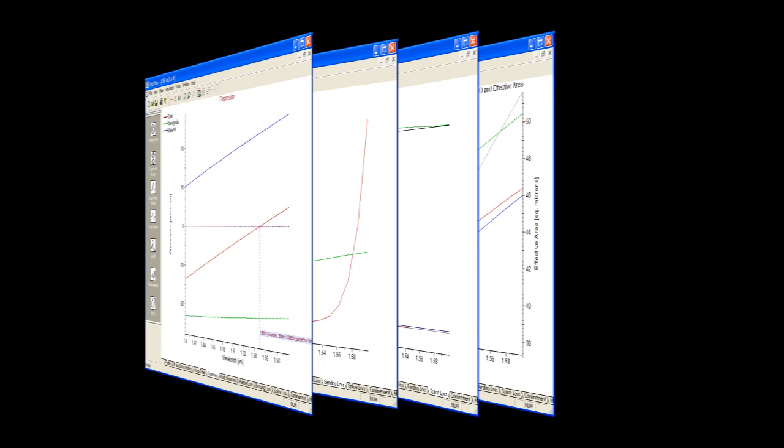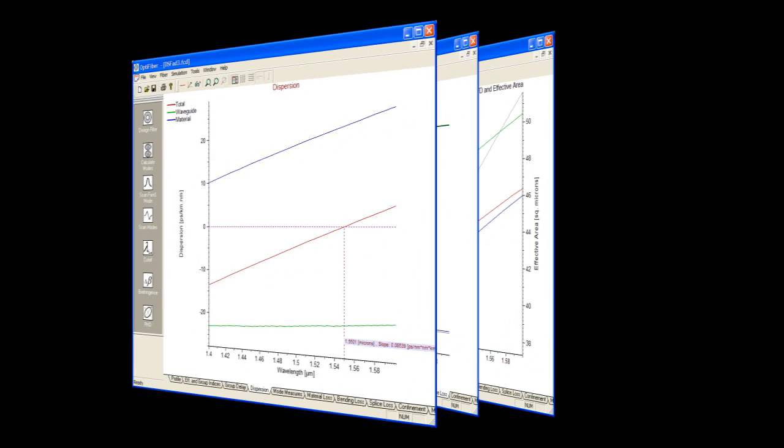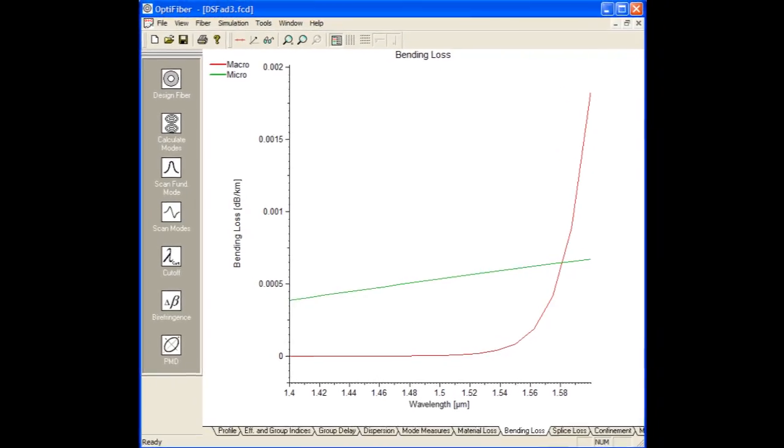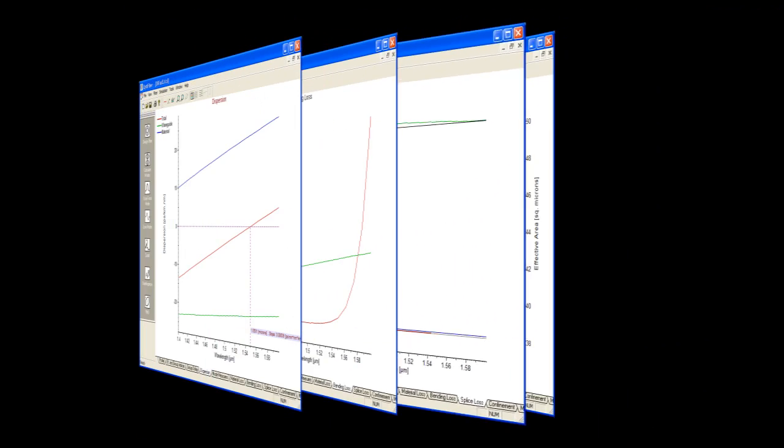From the mode solutions, OptiFiber calculates and displays many parameters important in optical fiber design, such as group delay and dispersion, micro and macro bending losses, splice loss, and mode measures.